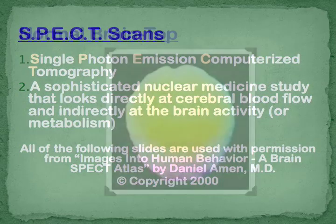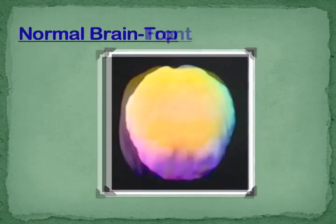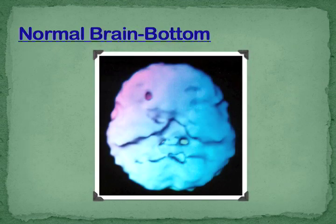A SPECT scan is special imaging of the brain. This is looking straight down from a bird's eye view down at the brain. This is your face here, and this is the back of your head. This is looking head-on at the brain — the top and your chin. This is looking up at the base of your brain from your feet — your face and the back of your head.